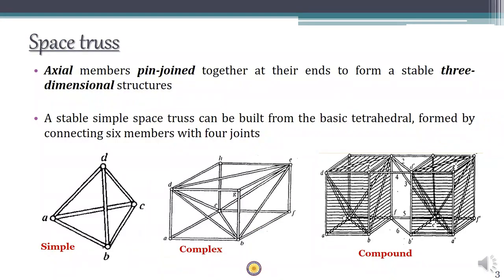Space trusses are axial members which are pin-jointed together to form a stable three-dimensional structure. So the members will be having only axial forces — either compression or tension.